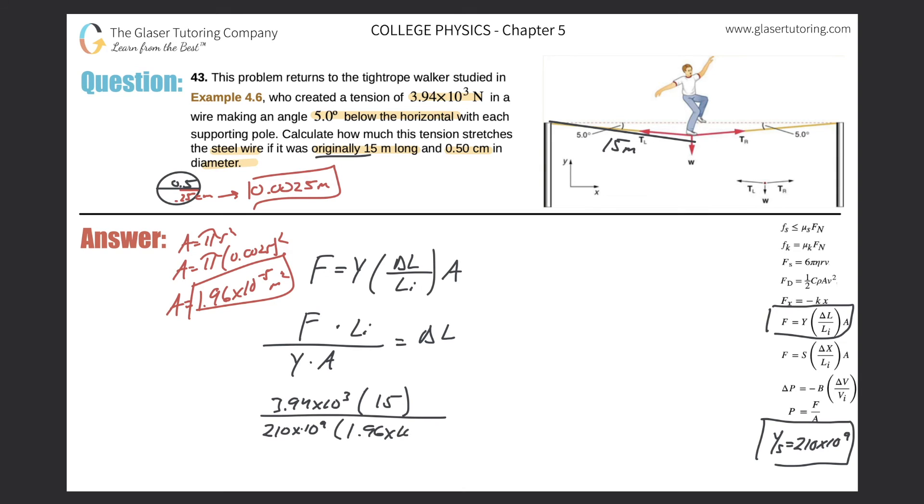This is what I can plug into my formula here: 1.96 times 10 to the minus 5. Now throw it into the calculator. We get 3.94 times 10 to the third times 15, divided by 210 times 10 to the 9 times 1.96 times 10 to the minus 5. We get a value of 0.0144 meters, or in other words, thinking about centimeters, that might be more easily related - 1.4 centimeters.